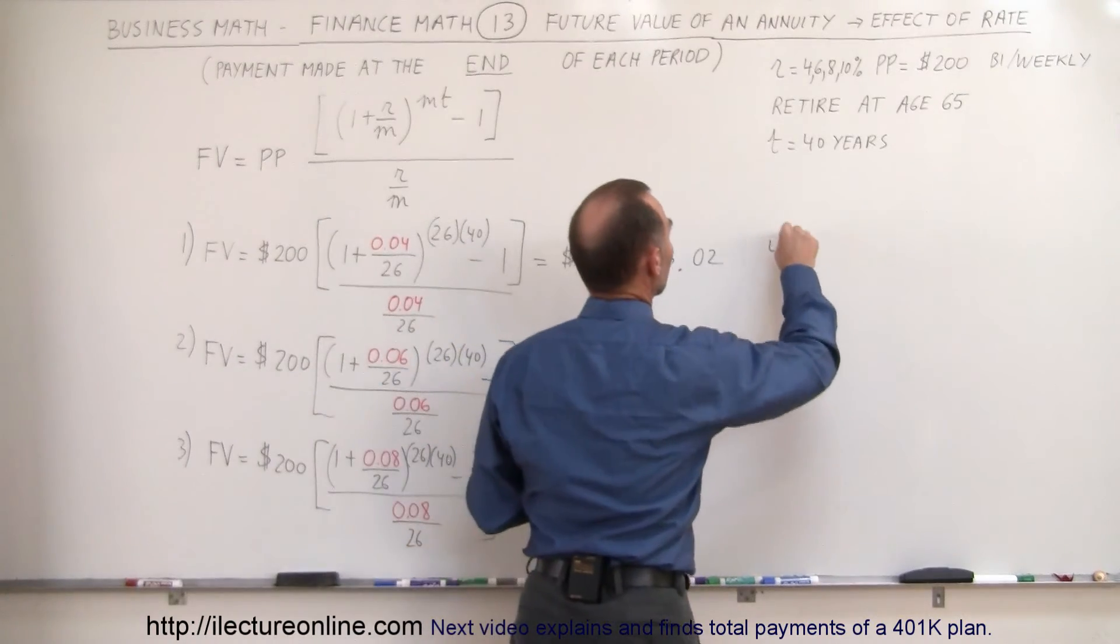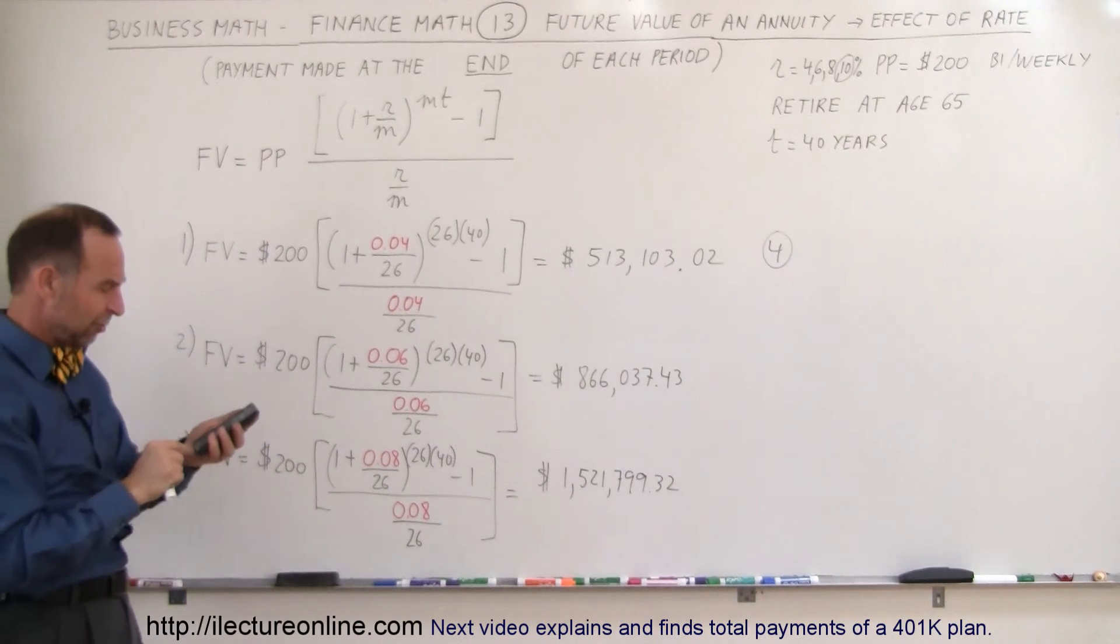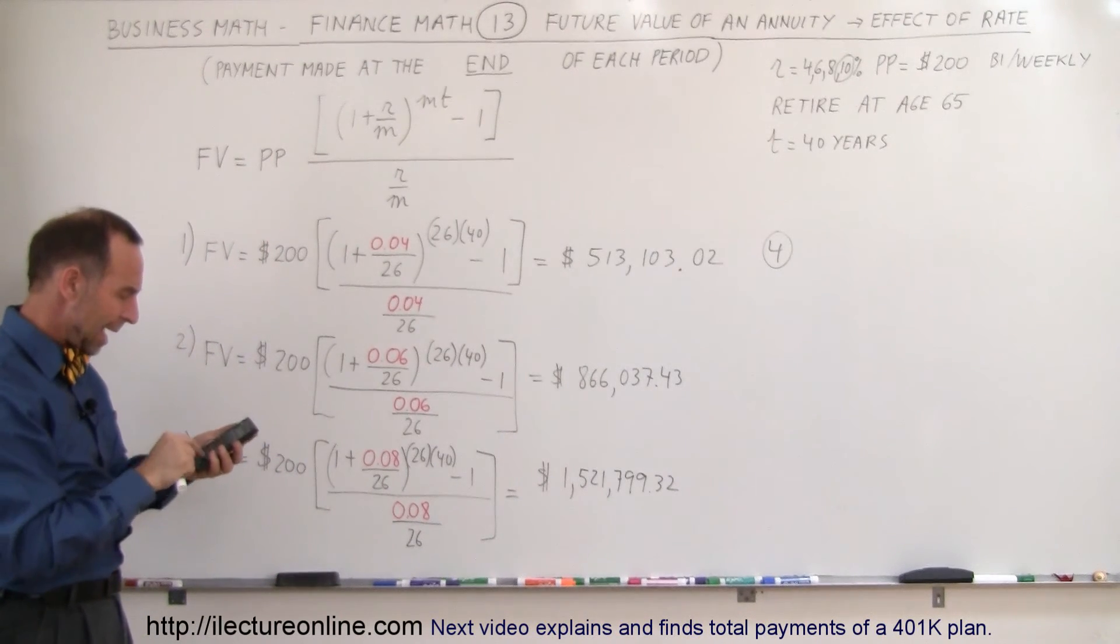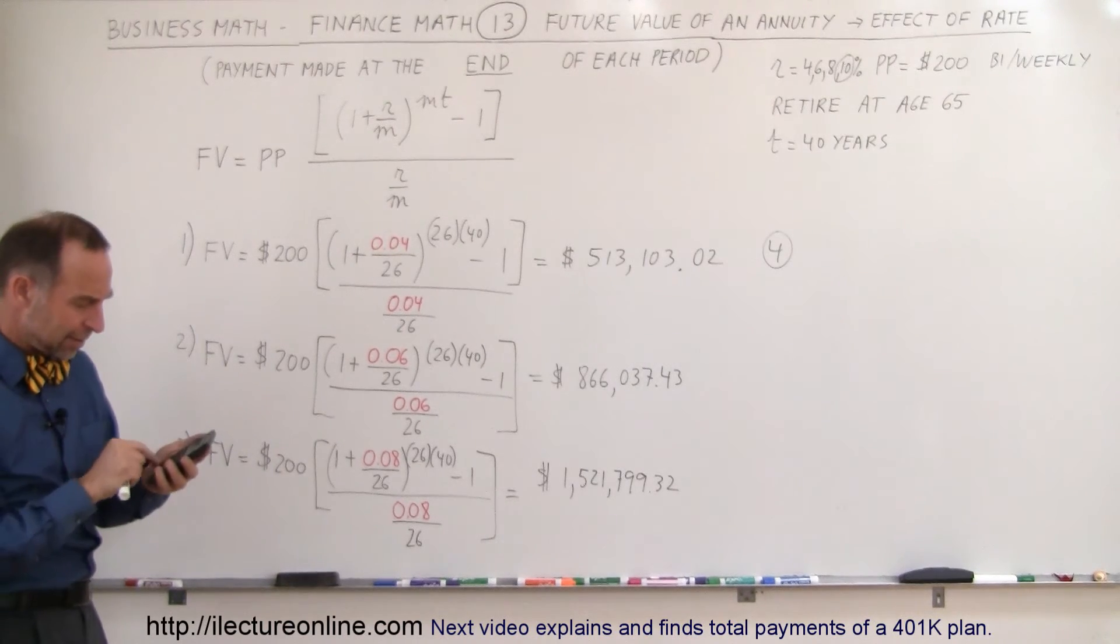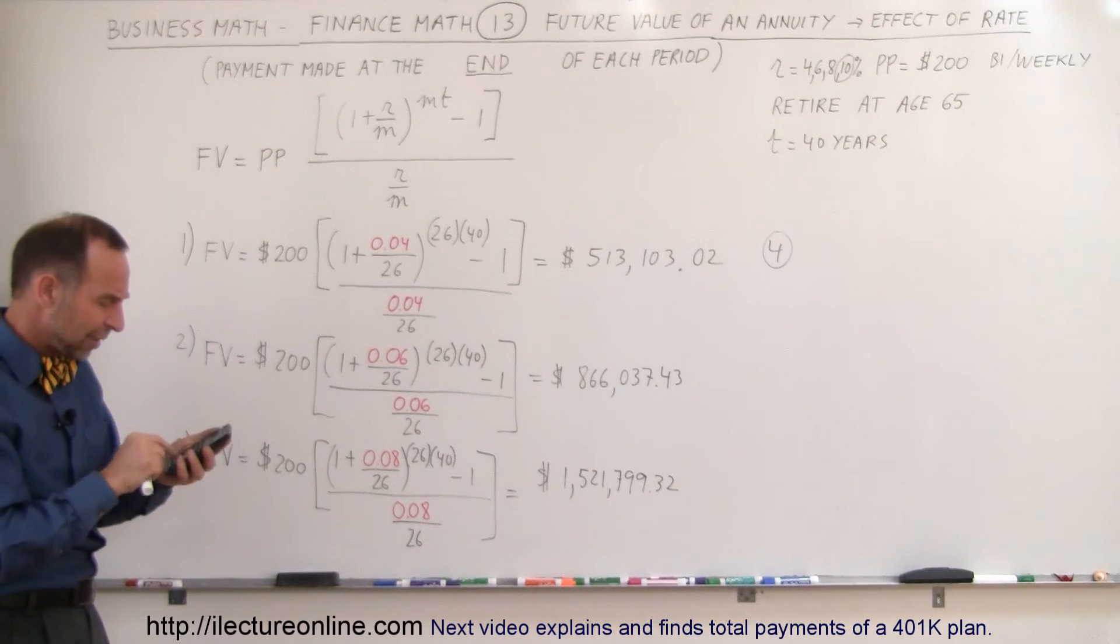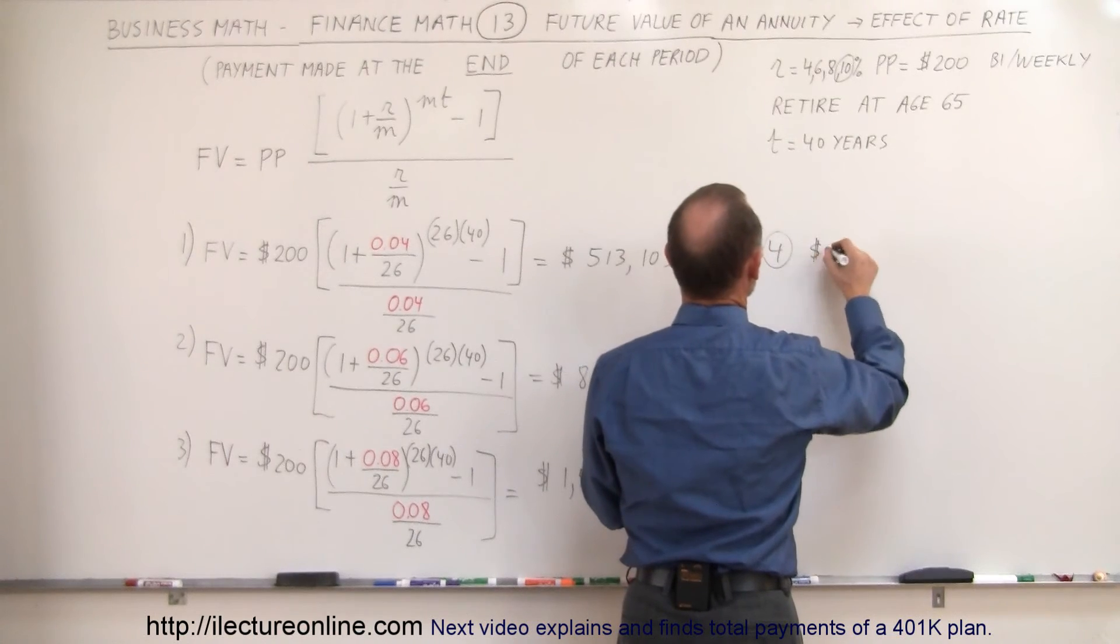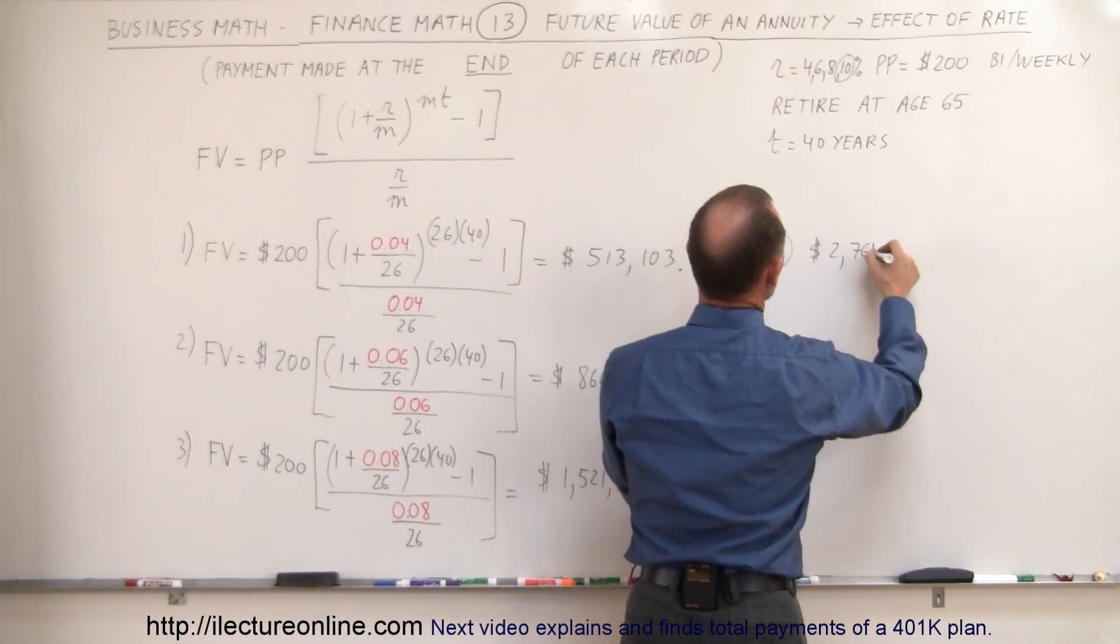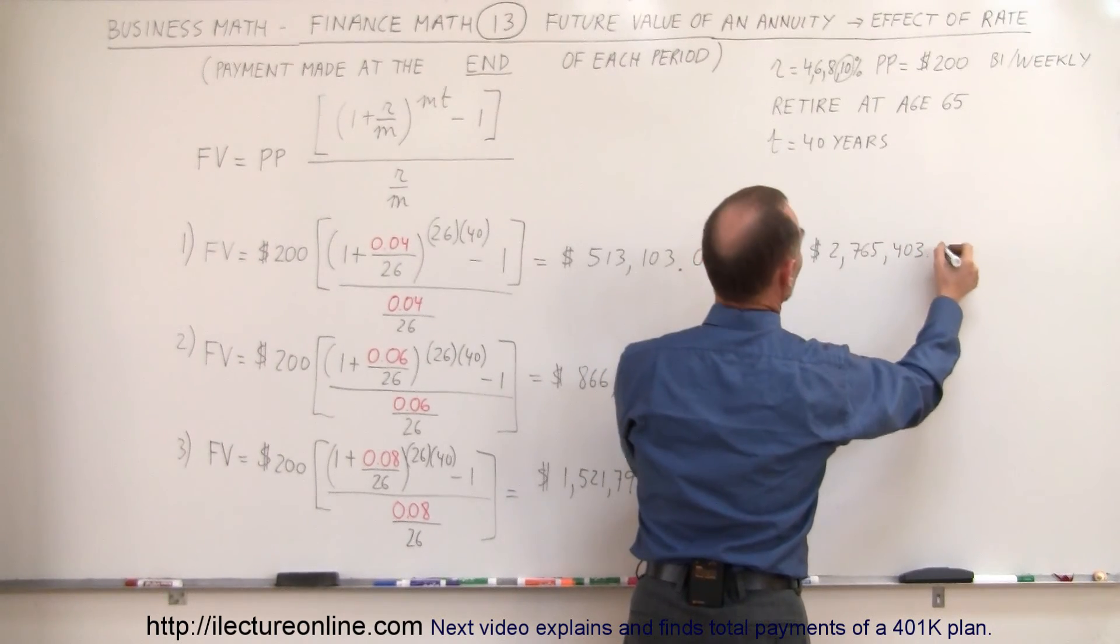So for scenario 4, when we have 10%, we're going to change the 0.08 to 0.1 and see what we get. So we've got 0.1 divided by 26. Add 1 to that. Raise that to the 26 times 40 power. Subtract 1 from that. Divide by 0.1 divided by 26, so multiply times the inverse, so times 26 divided by 0.1 and multiply that times 200. And when you do that, you would have in the bank, scenario 4 at 10%, you would have $2,765,403.72.